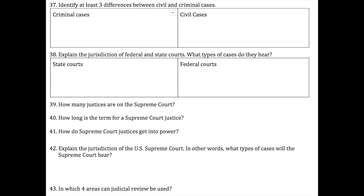Number 38: state courts handle crimes under state law — traffic, divorce, custody, contract disputes. Federal courts handle more nationally significant matters like patents, copyrights, bankruptcy, disputes between states, and interstate or international commerce. For example, if someone wanted to sue Saudi Arabia, that would be a federal level matter — the state of Georgia has no jurisdiction in that kind of argument.